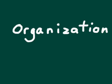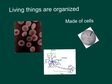The first characteristic is organization. Living things are organized, and the basic unit of organization for all living things is the cell. So living things are made of cells.